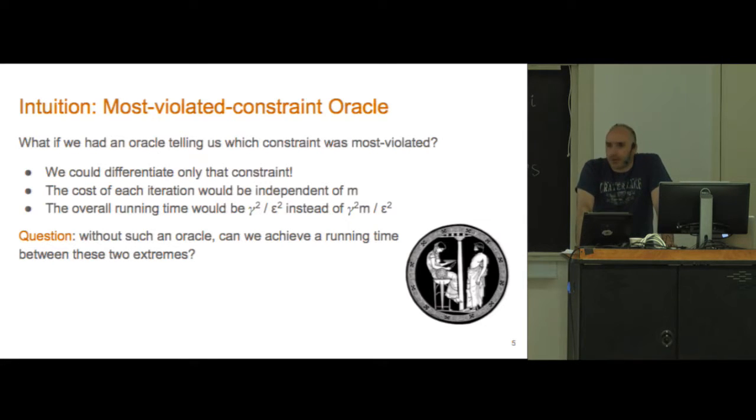What if we just had an oracle that would tell us which constraint was the most violated? Then we wouldn't have to worry about searching over all m constraints to find the most violated. We'd just go straight there, differentiate it, then take our step.